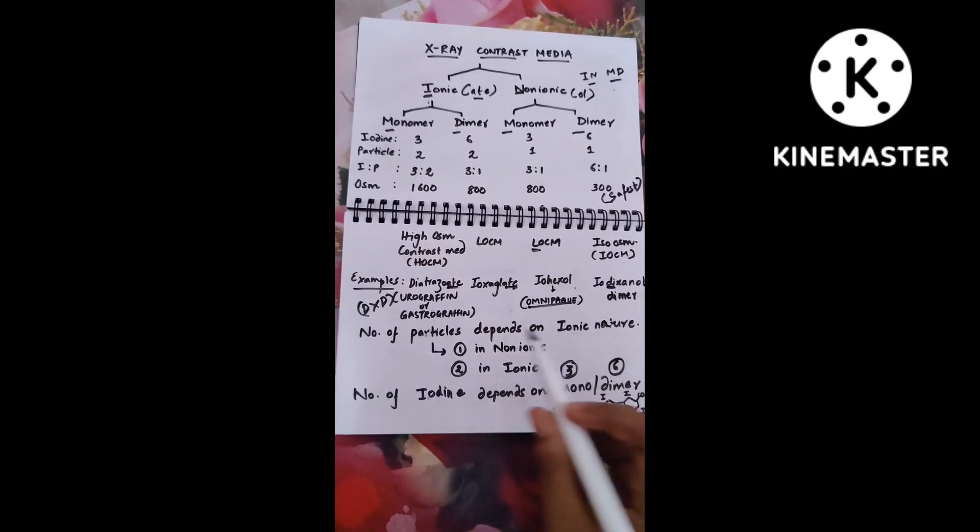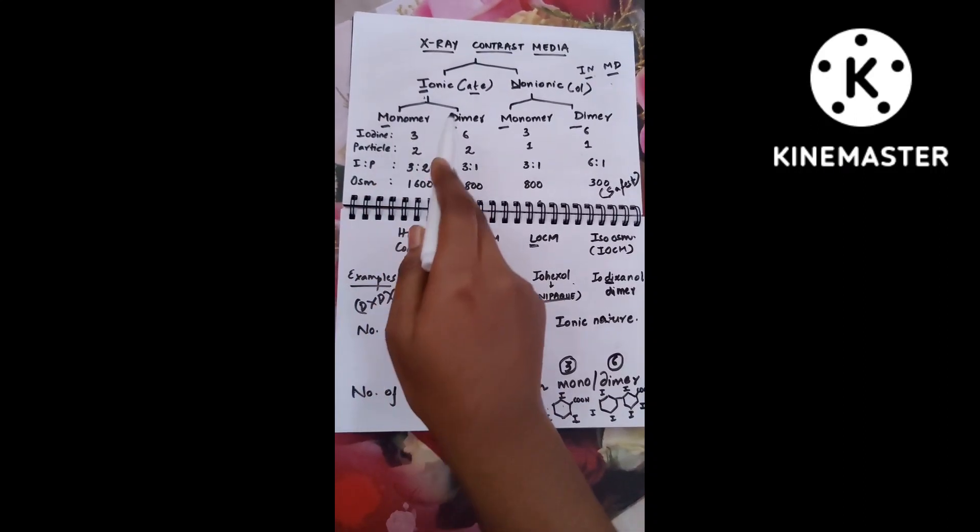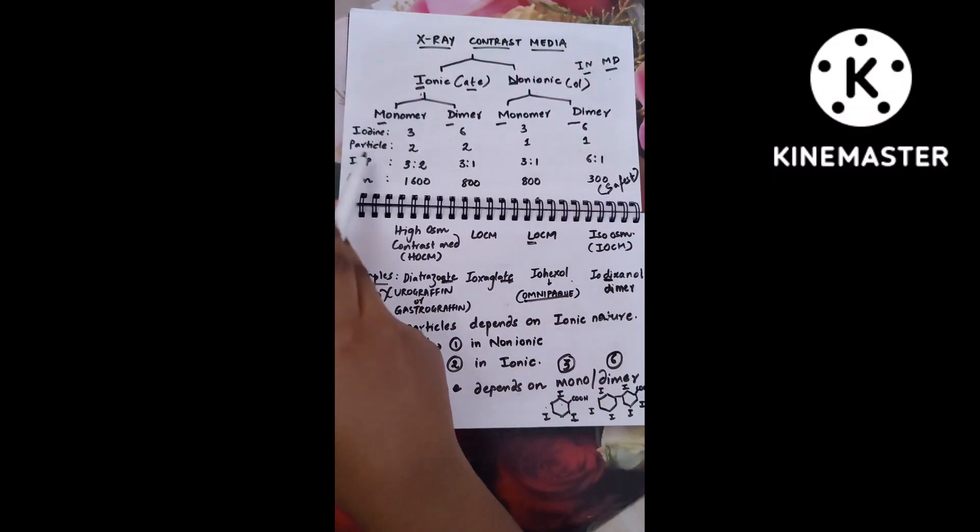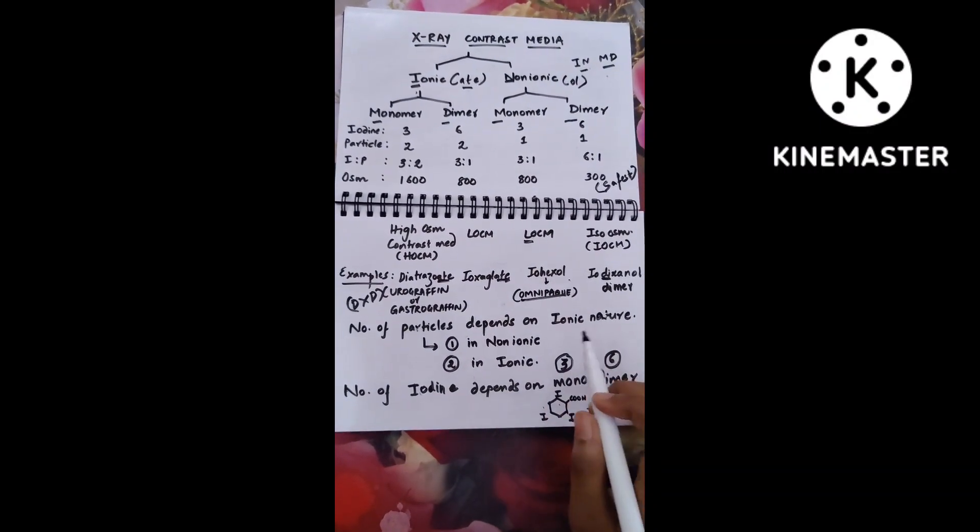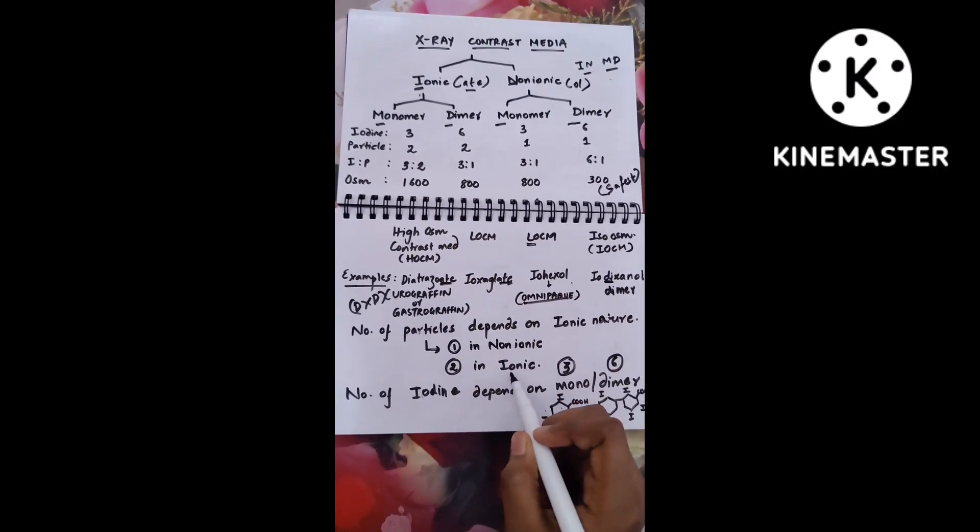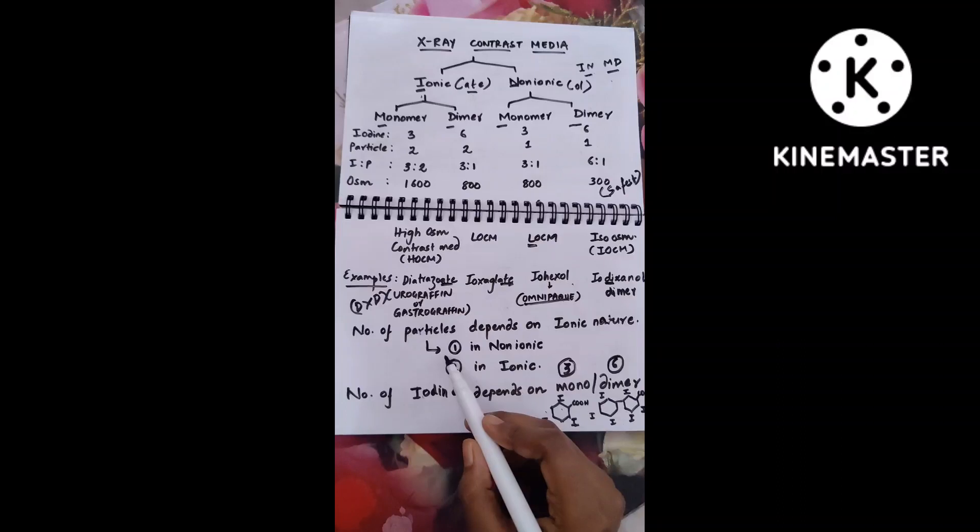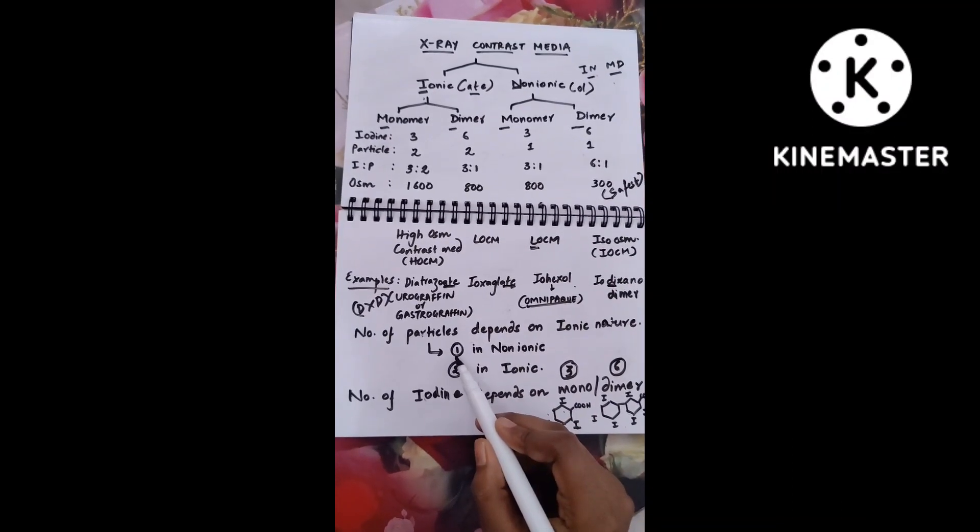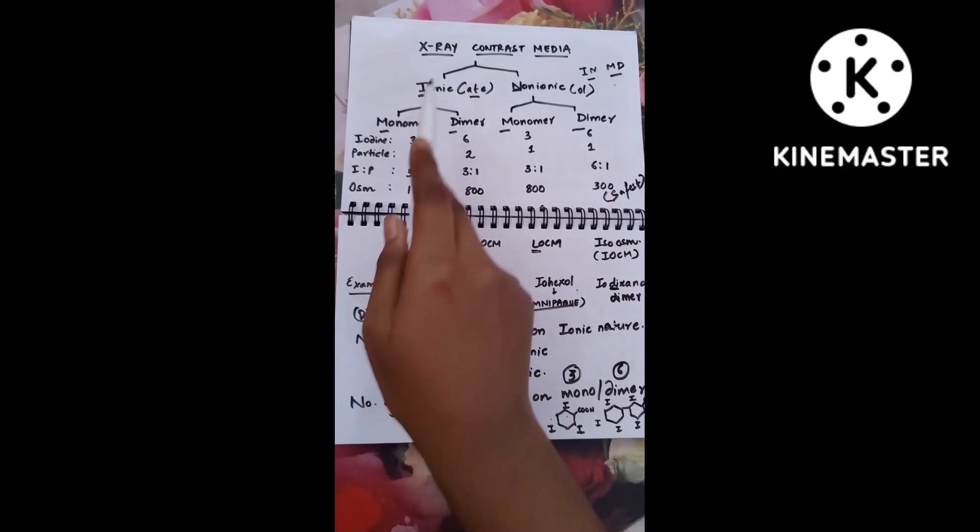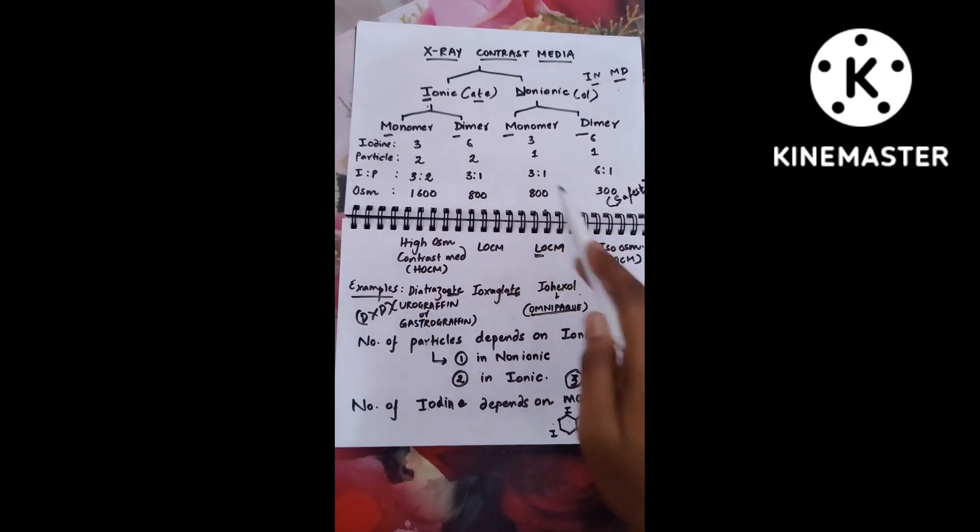Number of iodine depends upon monomer is three, dimer is six. Now let's talk about the particles. If a compound is ionic, it splits into positive and negative, so two particles will be there. If it is non-ionic, it stays as a single particle.